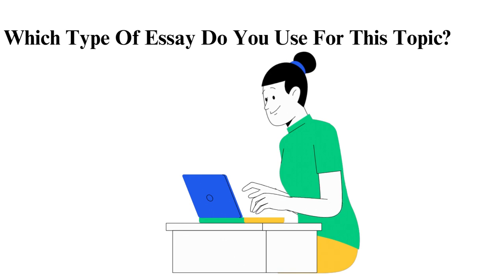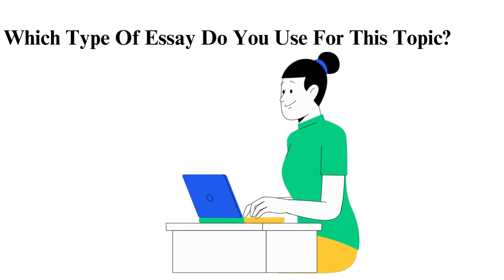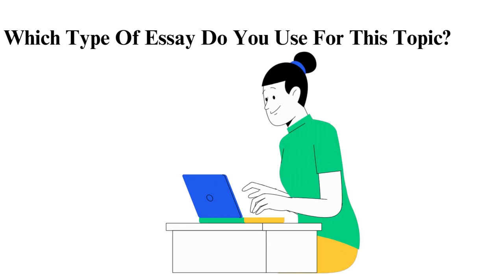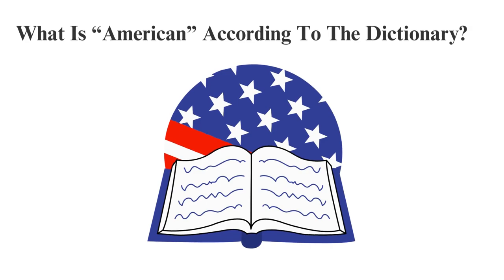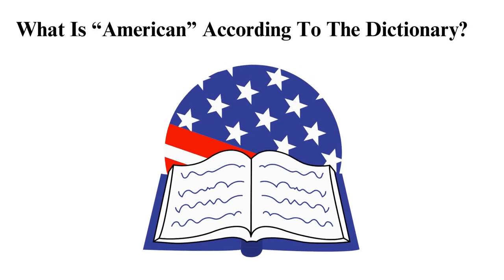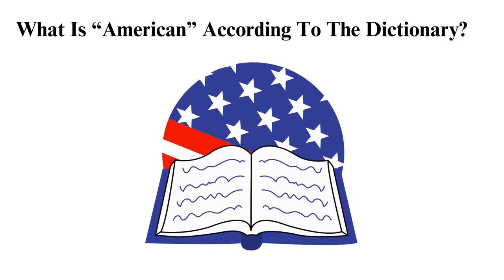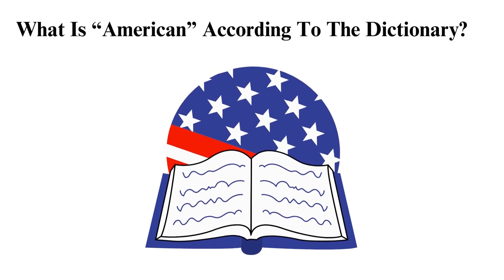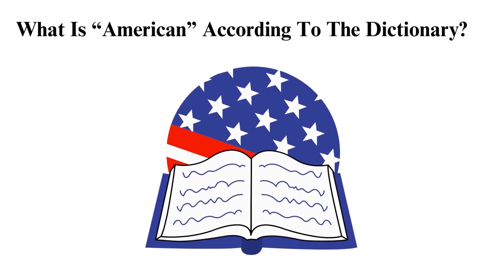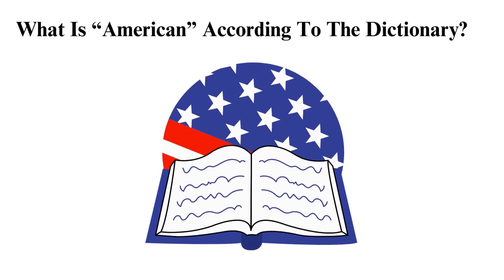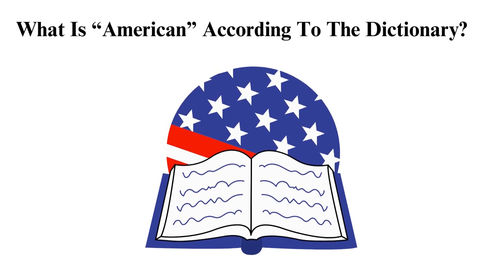Now that you know what an essay is and the type to use when discussing the topic, let's proceed to understanding the meaning of an American. According to the Merriam-Webster dictionary, an American is an inhabitant or native of any of the countries in the American continent. Another definition is that an American is something related to America. Going by these definitions, when you write what it means to be an American, you can write about anything that connects with America.